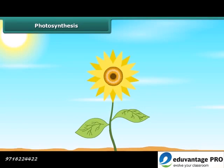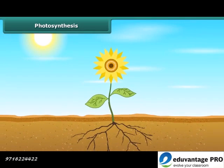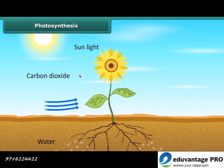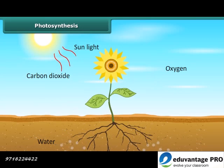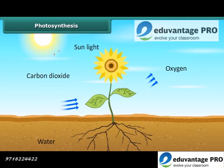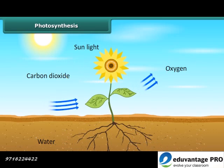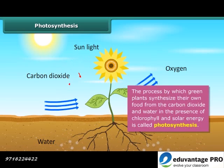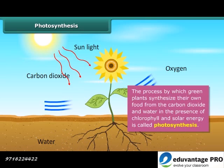As we know that green plants synthesize their own food. Green plants make their own food by the process of photosynthesis. Photosynthesis is a process by which green plants synthesize their own food from carbon dioxide and water in the presence of chlorophyll and solar energy.